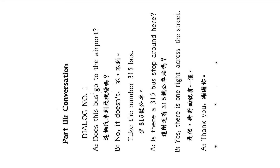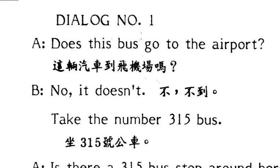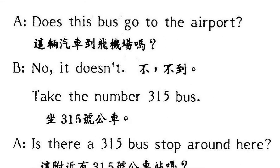下面请各位继续看 Part 3，Conversation，绘画的部分。Dialogue number 1，第一组的对话。A 就问 B：Does this bus go to the airport? 这个人想到飞机场去，所以他就问公车的驾驶。这句话的文法，是动作动词的疑问句。This bus goes to the airport，改成疑问句的时候，前面要加 does，goes 的 es 要去掉，用 go。Does this bus go to the airport? 这辆公车到飞机场去吗？